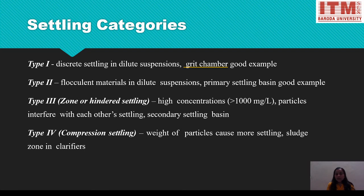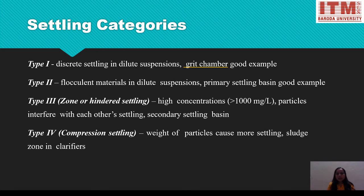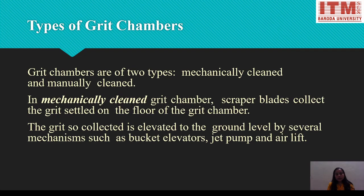Type 3 is zone or hindered settling, occurring at concentrations greater than 1000 mg/L, where particles interfere with each other's settling — the secondary settling basin is the best example. Type 4 is compression settling, where the weight of particles causes further settling in the sludge zone in a clarifier. As you move from Type 1 to Type 4, settling capacity increases; Type 4 represents the bottom sludge blanket with the highest settling capacity.